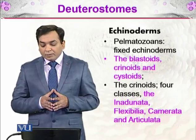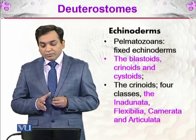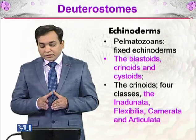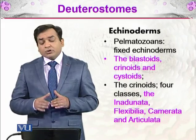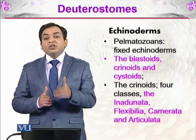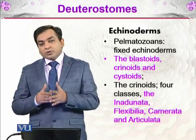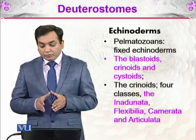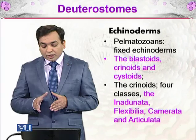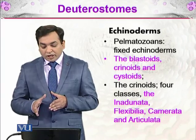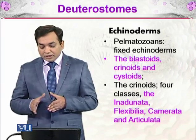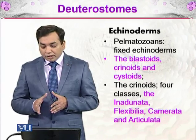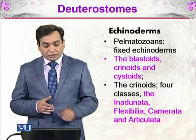There are the palaeozoic fixed echinoderms, blastozoids, blastoids, crinoids, and cystoids. We will discuss in which era these organisms were present. The crinoids had four classes: the inunduneta, flexibileta, camerata, and articulata.